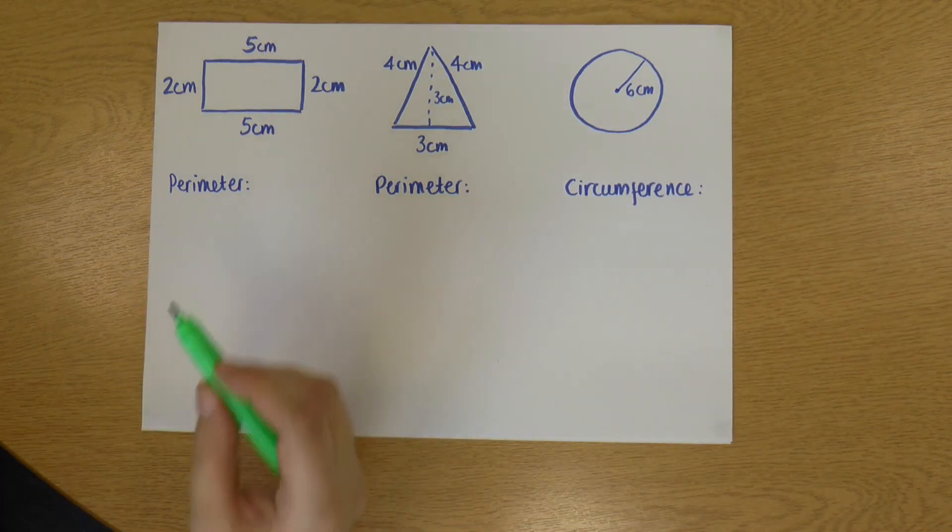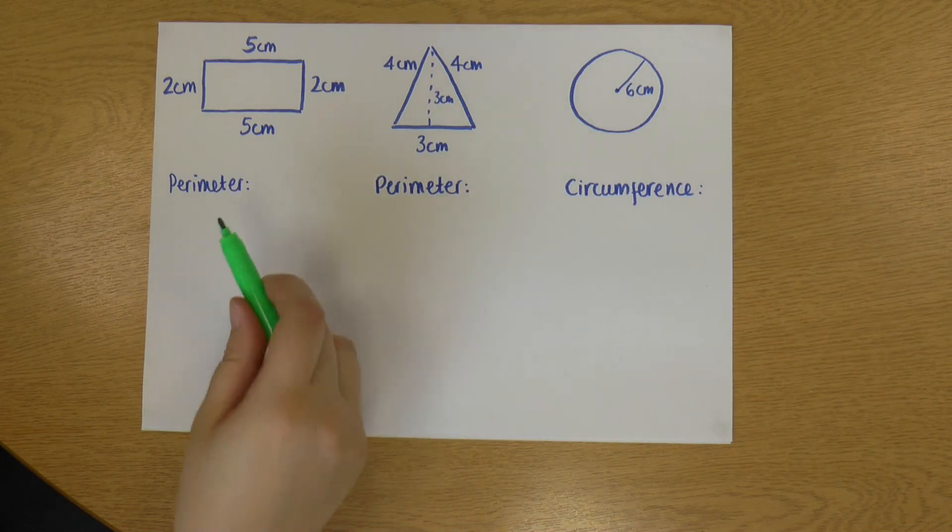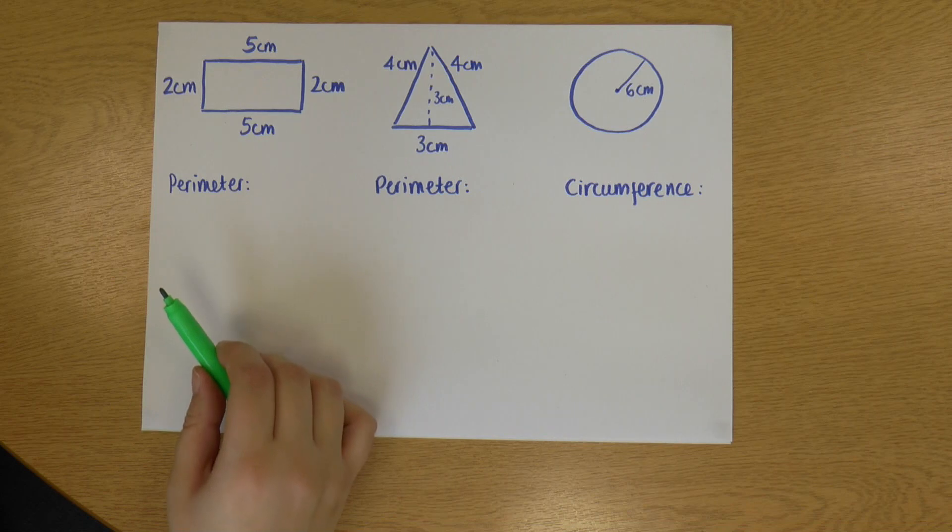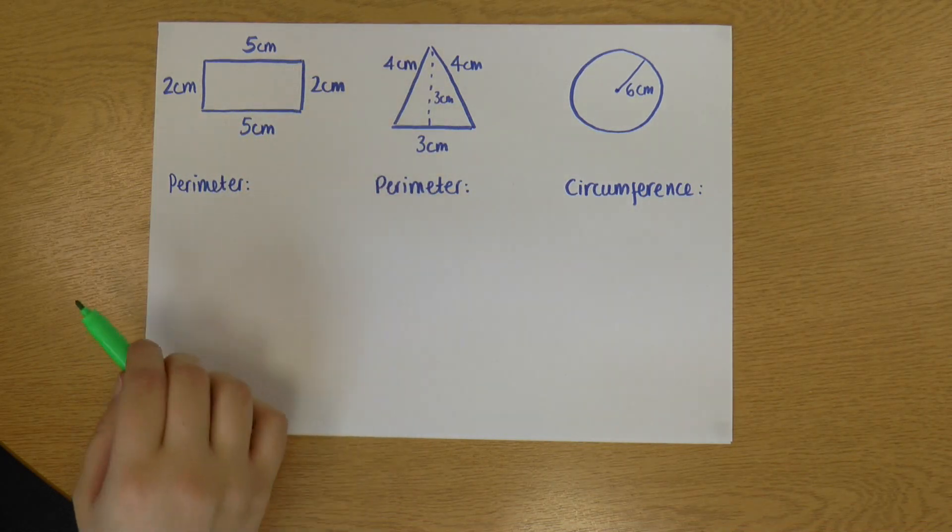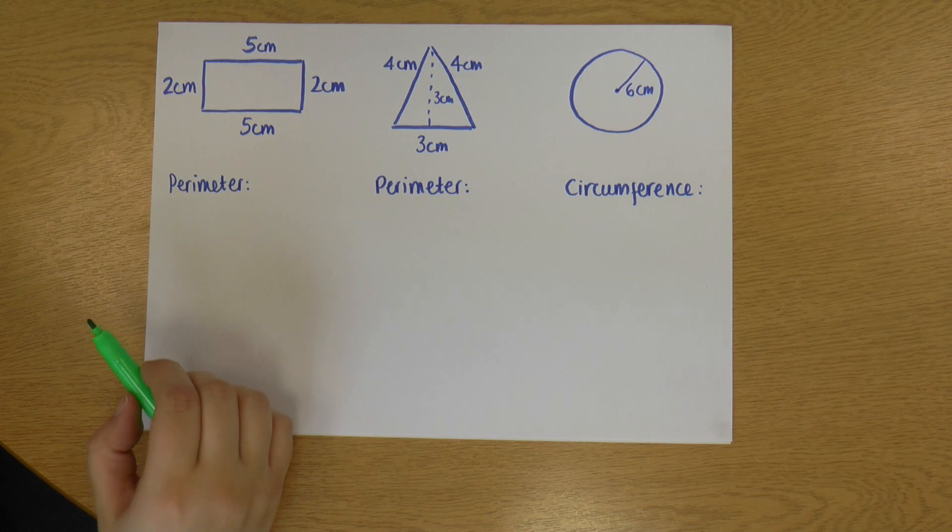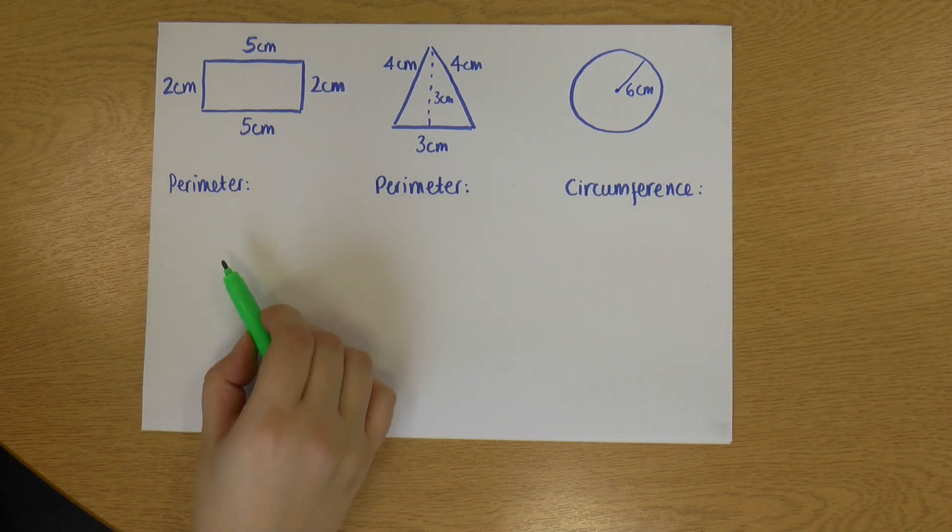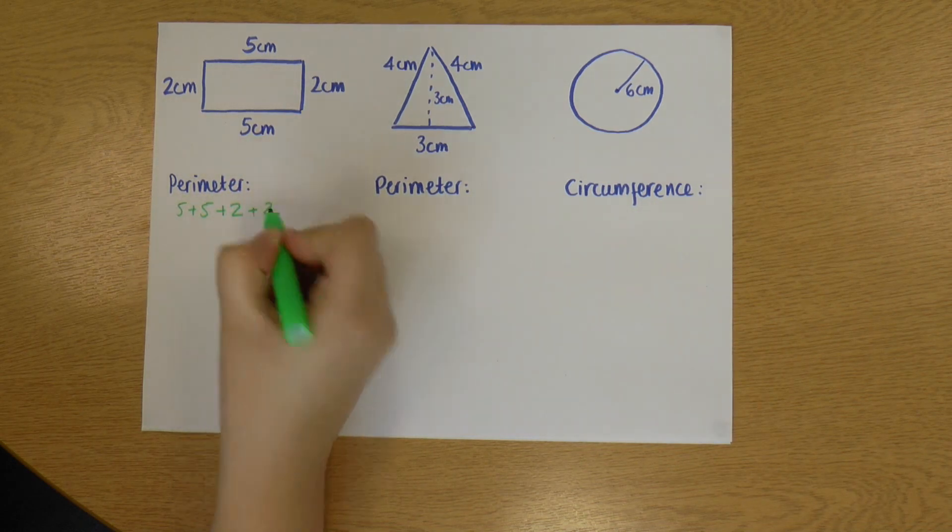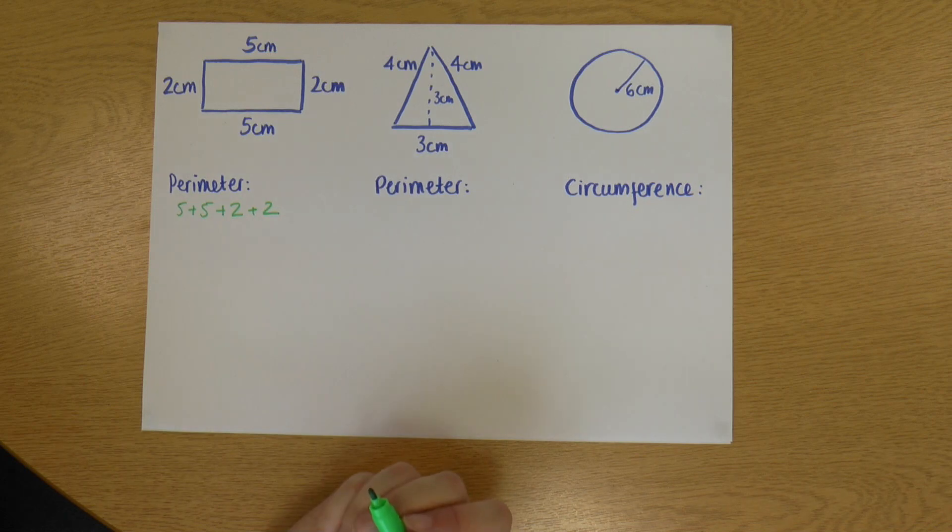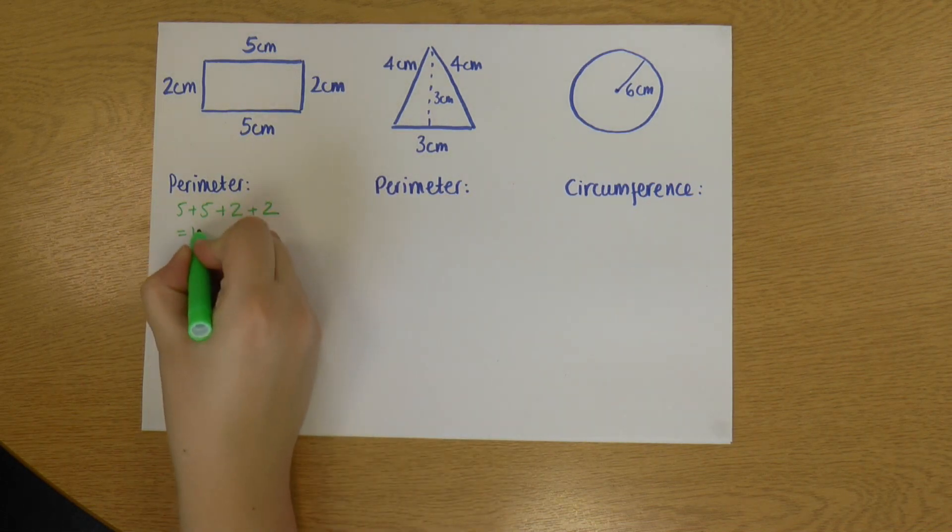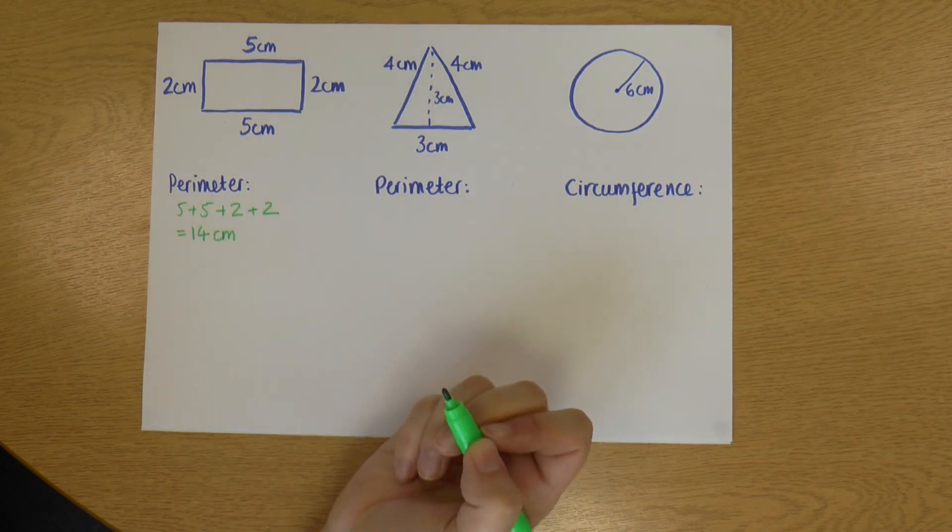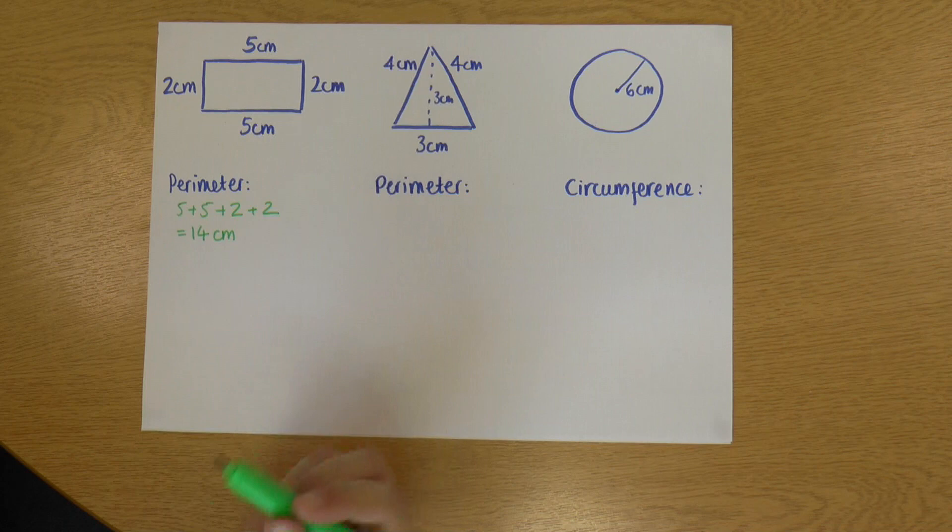So let's start with our rectangle. I have two long sides that are five centimeters each and two short sides that are two centimeters each. So to find the length of the outside, I just add them together. So my perimeter is 5 + 5 + 2 + 2, which is 14. And that's in centimeters because it's just a length.